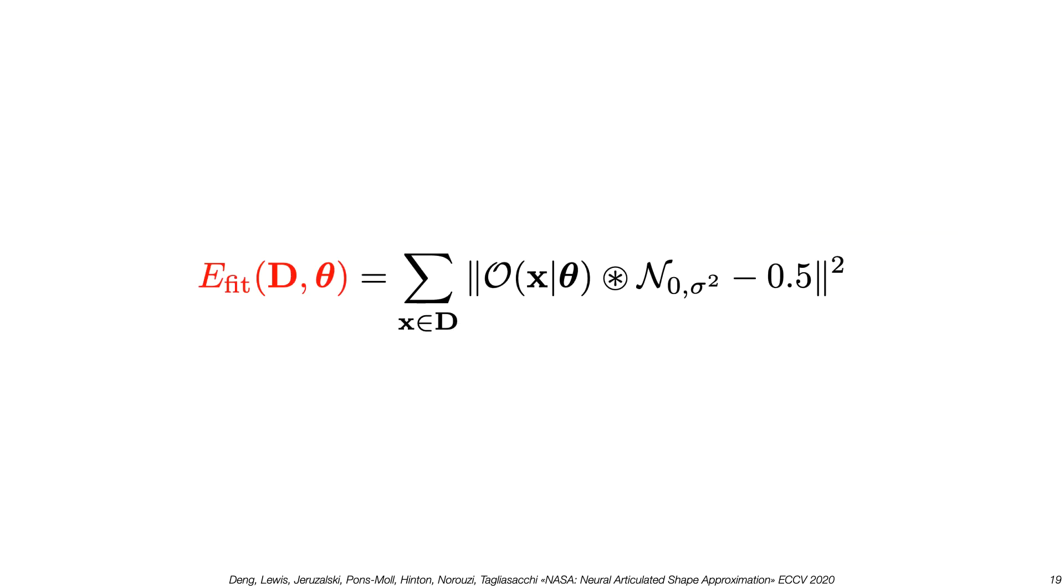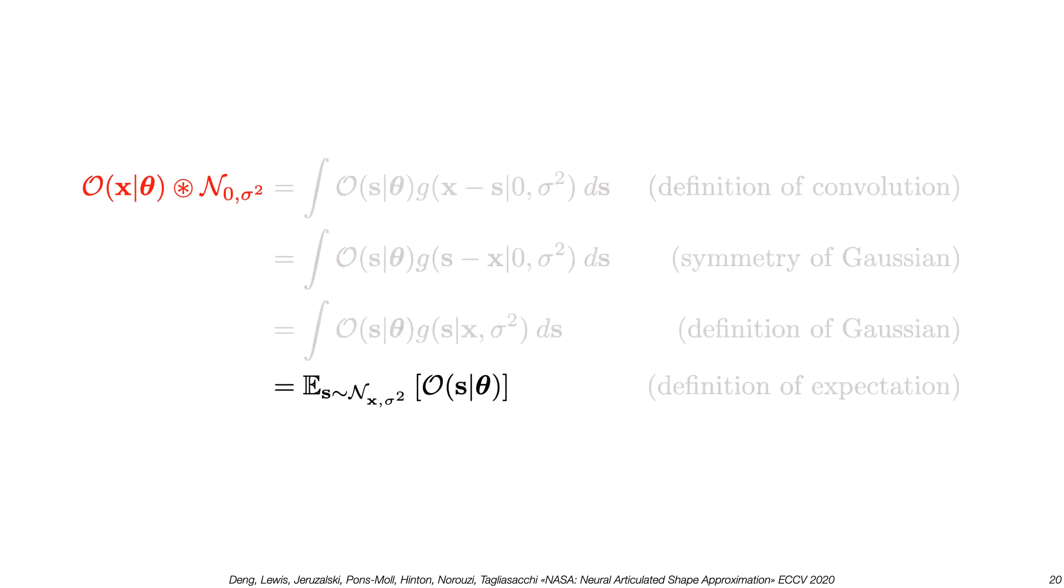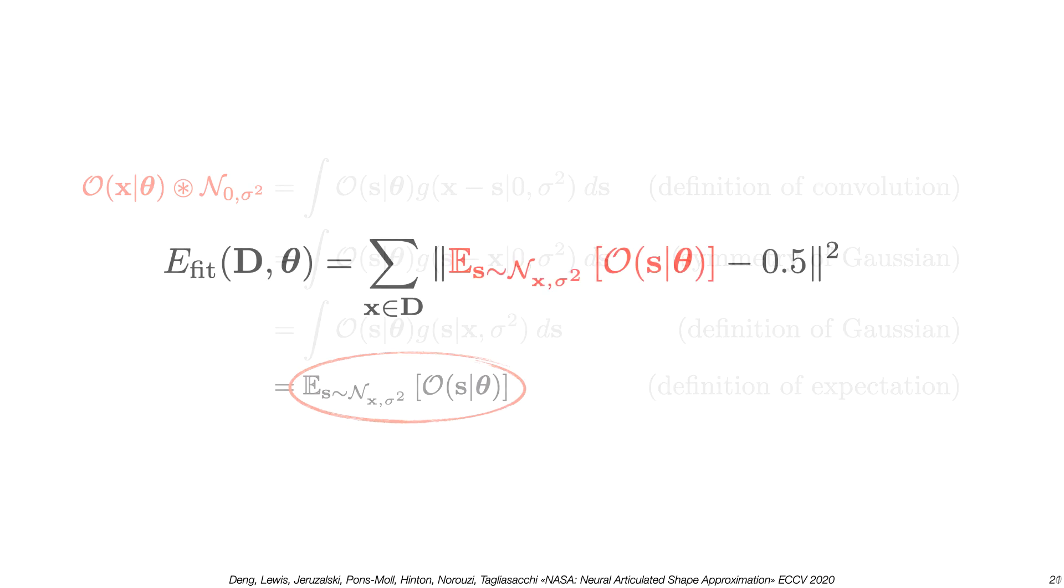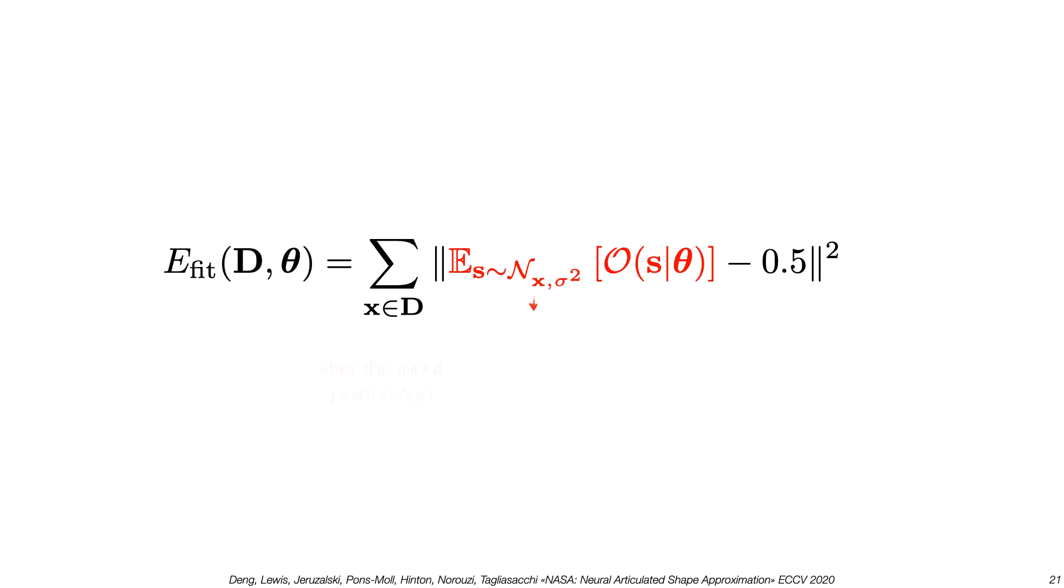We employ an alternative formulation where the neural implicit is convolved with a Gaussian kernel. But wouldn't this operation require us to evaluate expensive 3D convolutions? Actually not. We show that this term can be written as a simple expectation. Hence, our fitting energy evaluation requires us to first jitter the point cloud with some Gaussian noise and then query our pose conditional occupancy at these points. Note all of these operands in this expression have straightforward gradients.